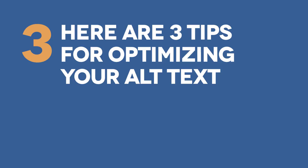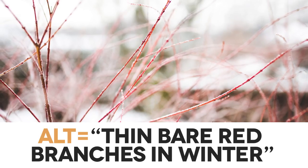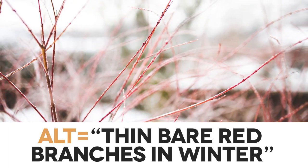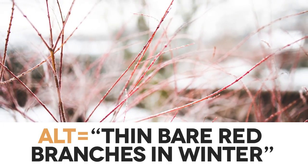Here are three tips for optimizing your alt text for the search engines and human visitors. Number one, be descriptive and accurate. For example, "thin, bare, red branches in winter" would be an appropriate alt text attribute for this image.